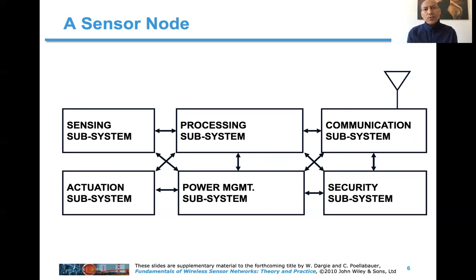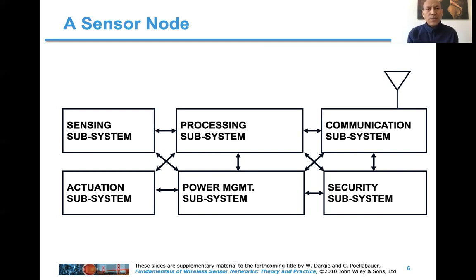The communication subsystem is responsible for taking a data stream, converting it into packets, and transferring those packets over a wireless link. It is also responsible for receiving packets, sending acknowledgments, and managing the radio chip. Because the radio chip is the most energy-consuming component of a wireless sensor node, it has its own power management subsystem to ensure the radio component utilizes power efficiently. A security subsystem is also included to ensure that data integrity from or to a sensor node is not compromised.